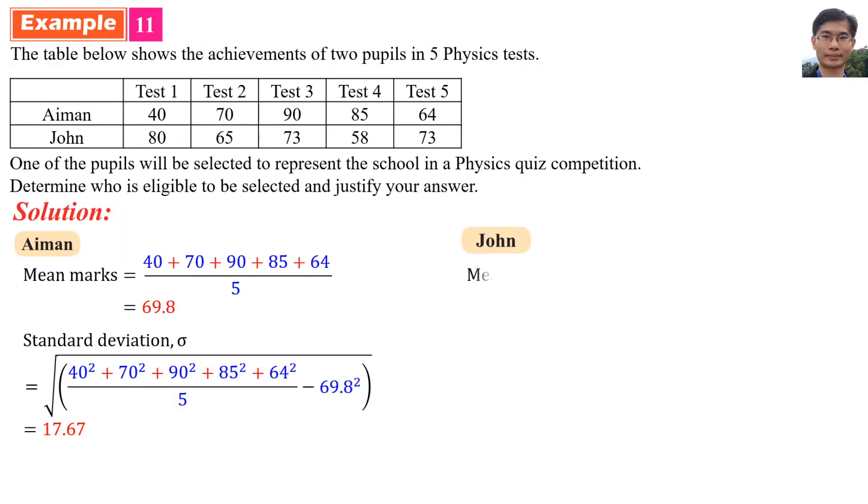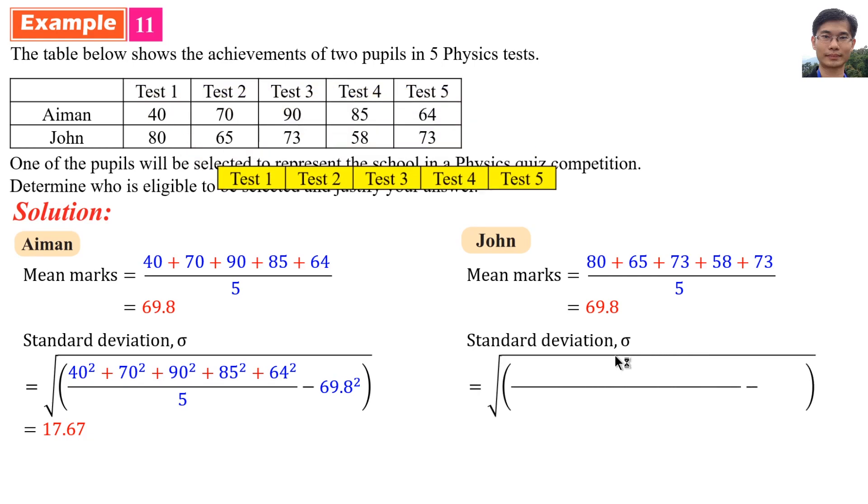Then, we find for John. The mean mark for John is 80 plus 65 plus 73 plus 58 plus 73, divided by 5 tests. So, the mean for John is 69.8, same with Aiman. Then, we find the standard deviation. Square all the scores and minus the mean, and remember to square root. And so, standard deviation is 7.574.